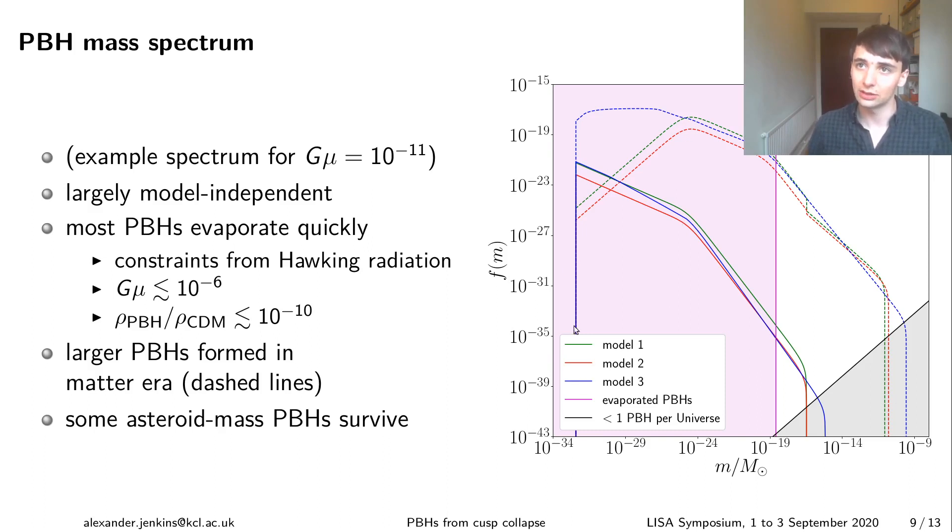I should mention that the solid lines here correspond to black holes formed in the radiation era and the dashed lines are the ones formed in the matter era where you have larger loops so you end up with more massive black holes. Most of the black holes that you form in this way are very small and the ones that lie in this pink region here evaporate due to Hawking radiation in a time much shorter than the Hubble time. You can use the fact that they produce this Hawking radiation to try to constrain them and the constraint that we found is something like 10^-6 for Gμ which is very similar to existing CMB constraints and the nice thing about this is that it's model independent because these spectra are so similar to each other.